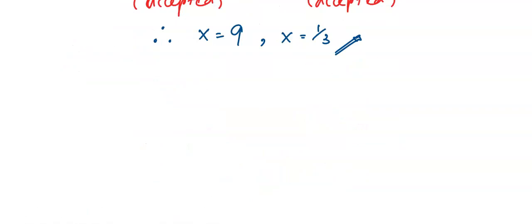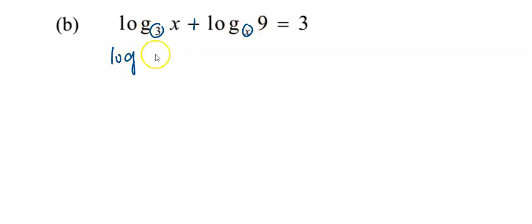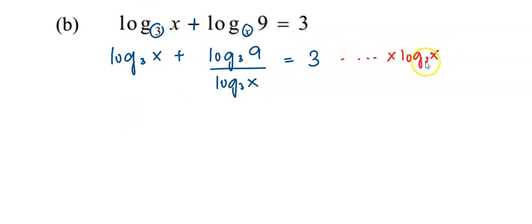Now we proceed to the next example. We have log base 3 of x plus log base x of 9 equals 3. Again, check the bases. I'm going to convert all of them into base 3. I will change the second log term: log base x of 9 becomes log base 3 of 9 over log base 3 of x, equals 3. Then I'm going to multiply all the terms by log base 3 of x.